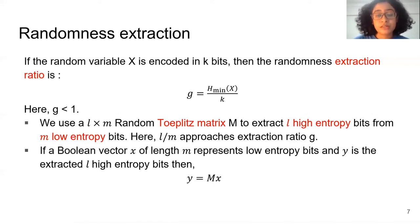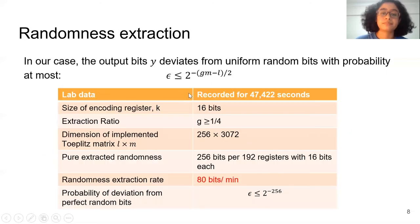There are many approaches to extract randomness from a system. We have used L by M random Toeplitz matrix multiplication to extract L high entropy bits from M low entropy bits, where the ratio L over M approaches g. This is a summary of our lab data, around 35.6 kilobytes. The encoding register has 16 bits. Our randomness extraction rate is 80 bits per minute. The security parameter on output random bits is 2 to the power minus 256. This means if an adversary wants to predict the next bit, they would have to process 2 to the power 256 bits, which is computationally infeasible.